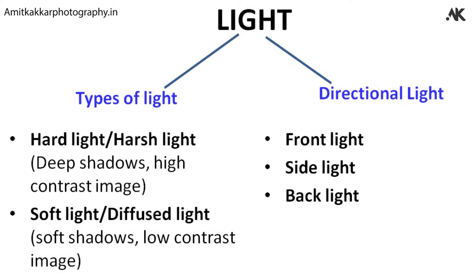With harsh or hard light, you get deep, dark shadows in a photograph — in other words, the photograph is more contrasty. With soft light or diffused light, you get very soft shadows, and the image is less contrasty compared to a harsh light photograph.